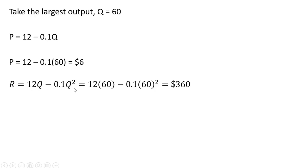If we take the larger number here, Q = 60, we'll plug that into the price equation. And we get a price of $6. And our revenue, evaluating the revenue equation when Q = 60, we get $360 of revenue. Alternatively, revenue is just price times quantity, so 6 times 60 is another way to find total revenue.